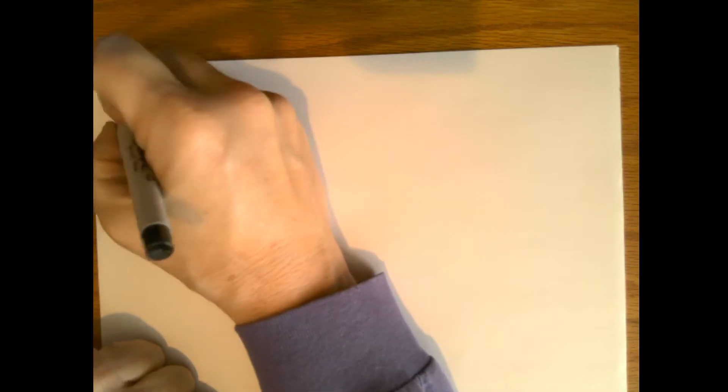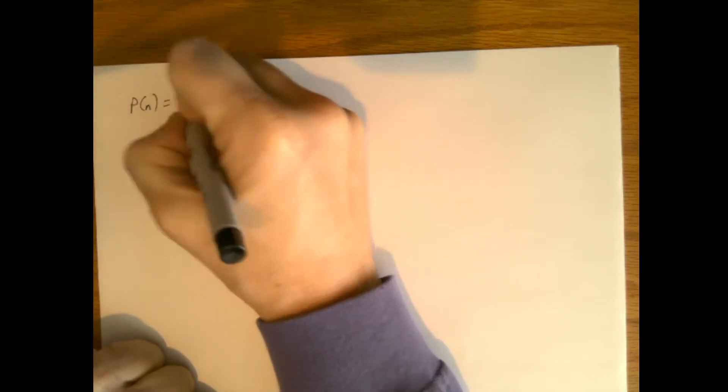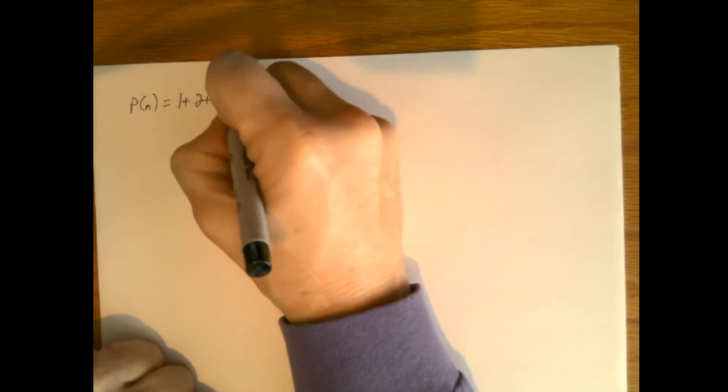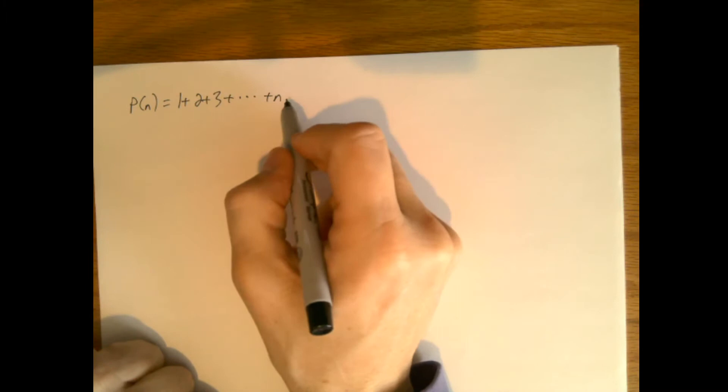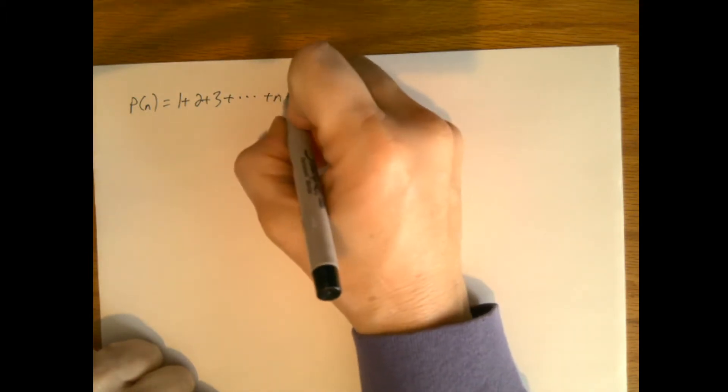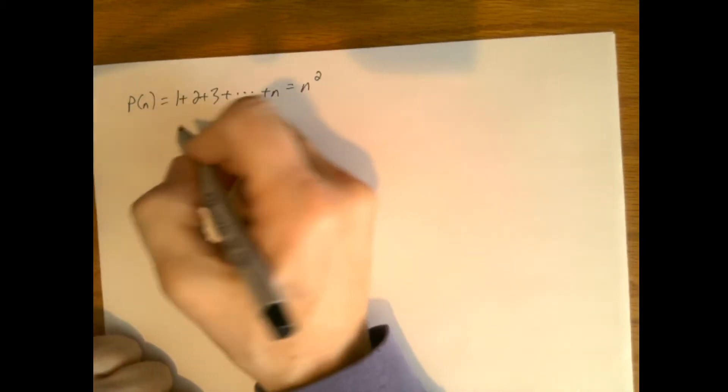So let's say we believe that P(n) is equal to 1 plus 2 plus 3 plus dot dot dot plus n, which we've already seen several times now. What if for some reason we thought that was equal to n squared? So what happens when we try to prove it?